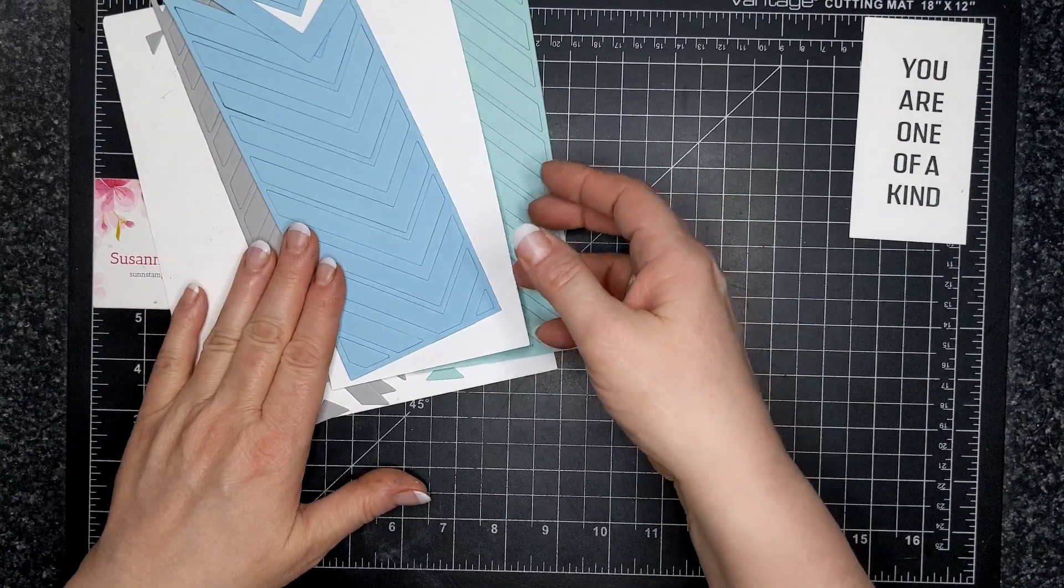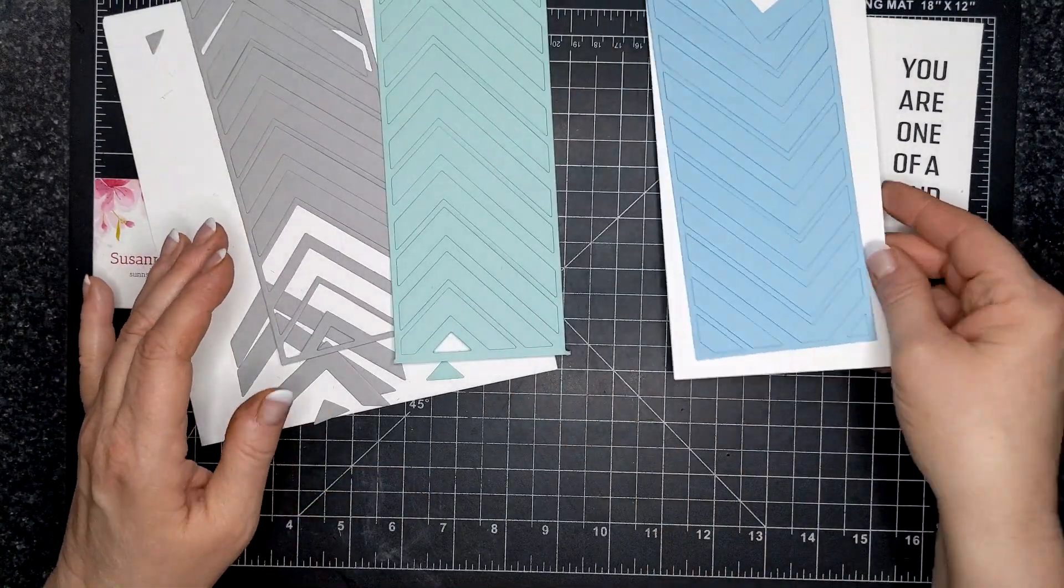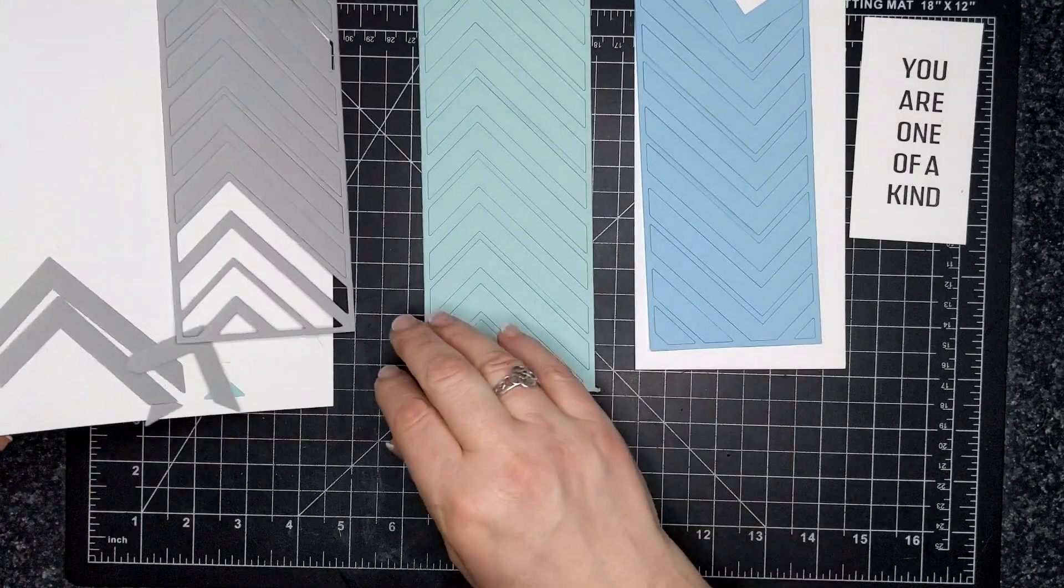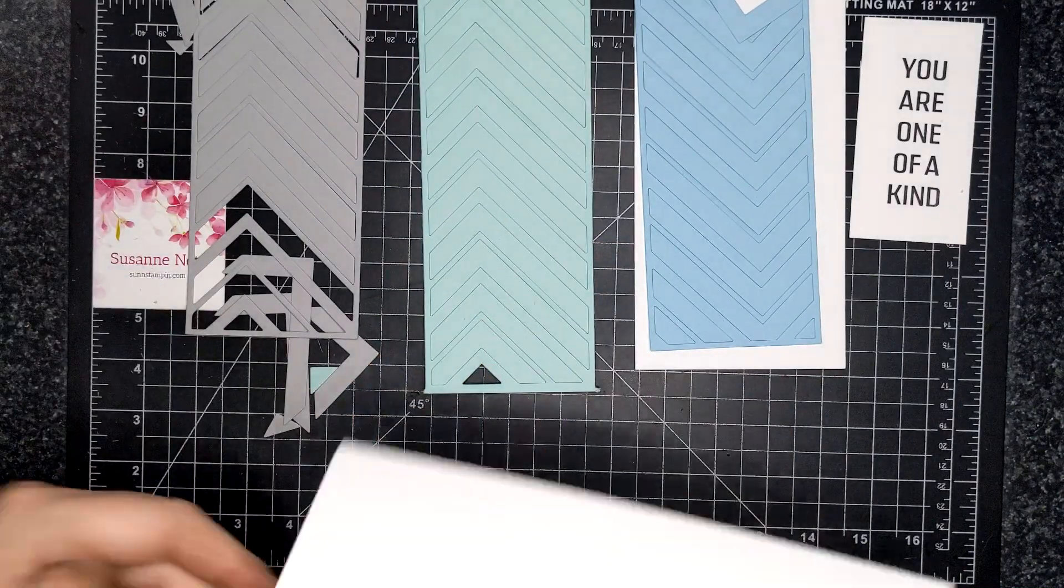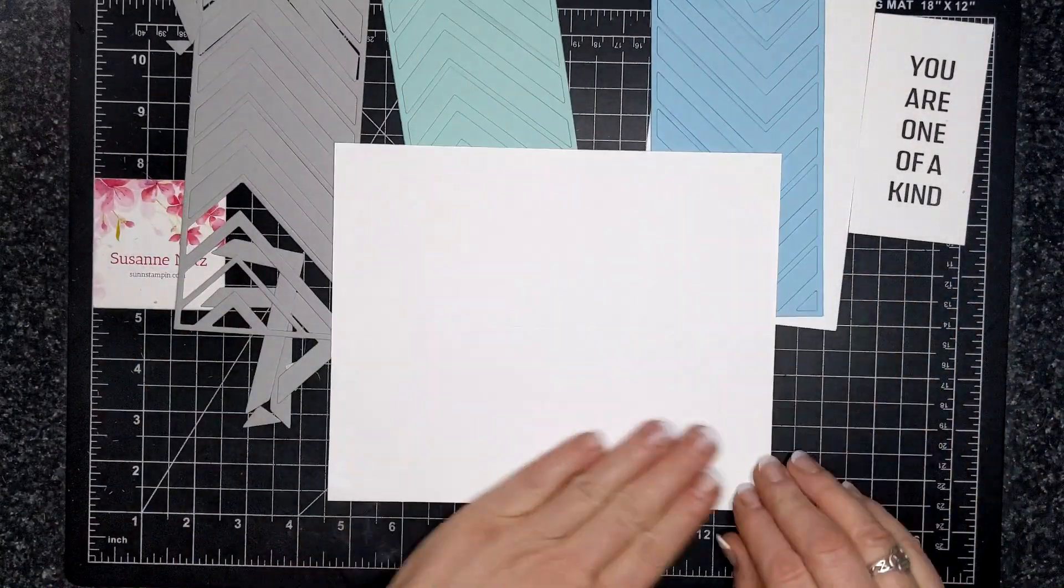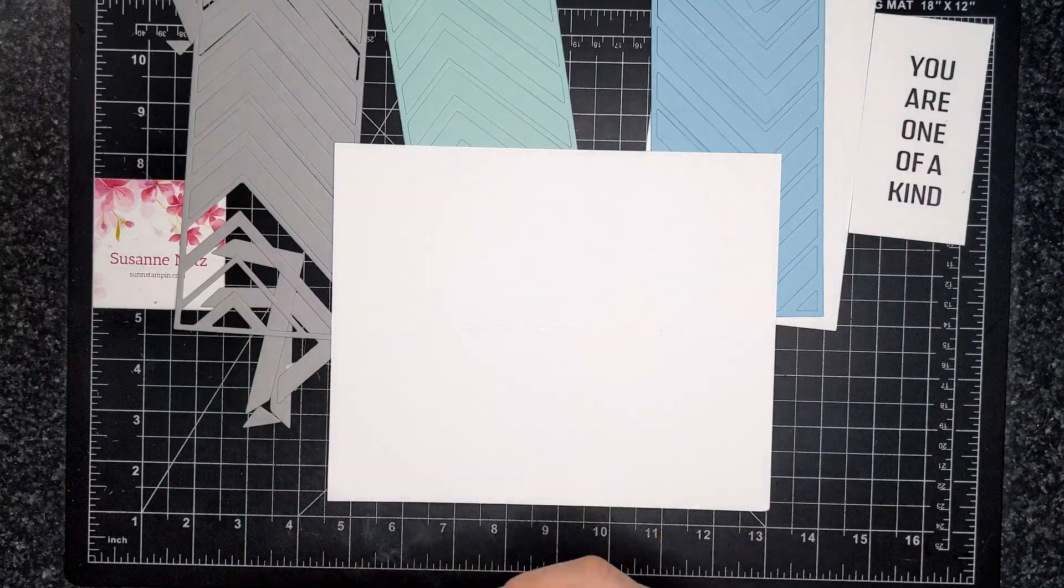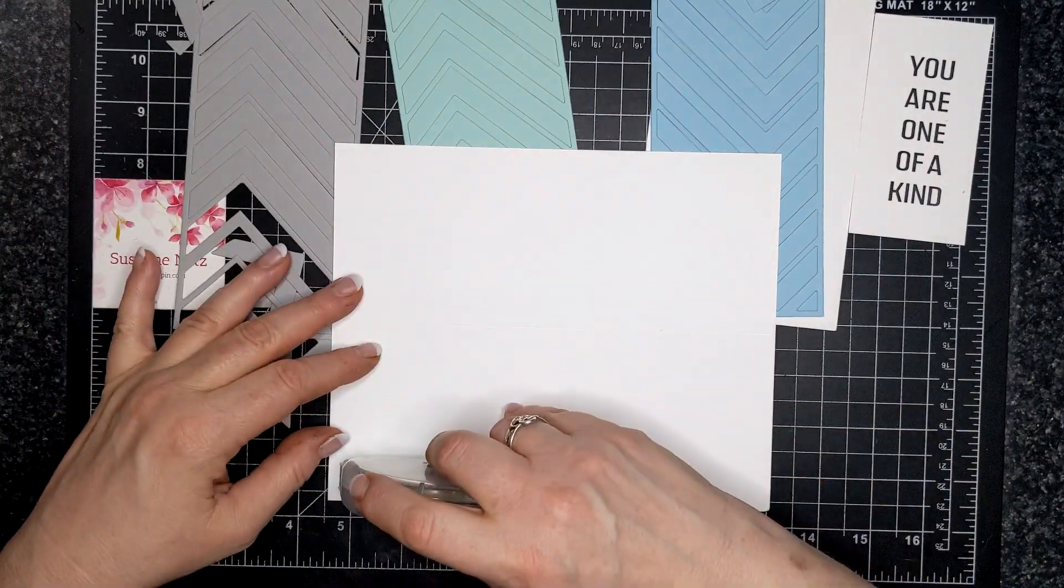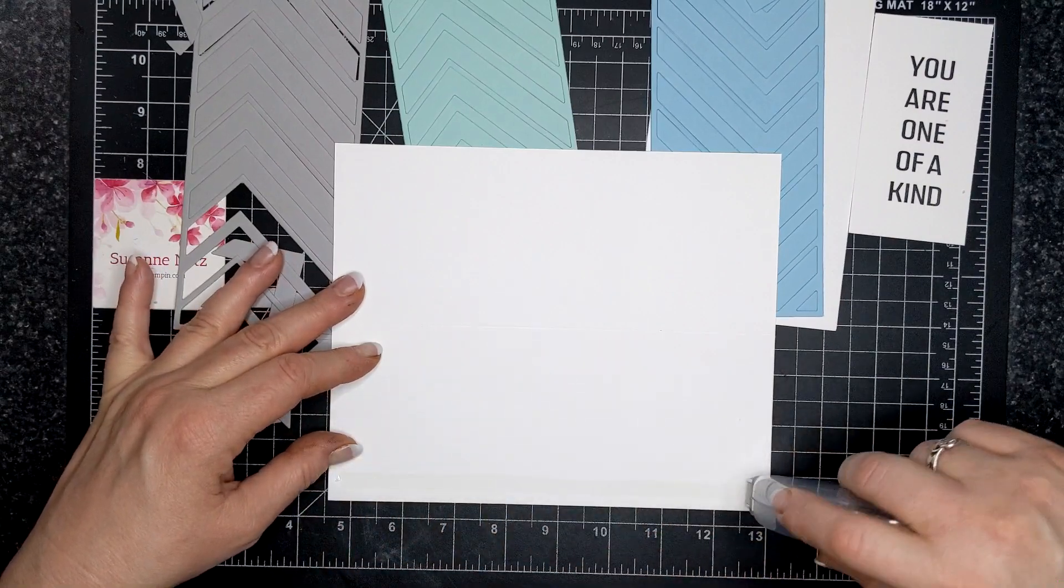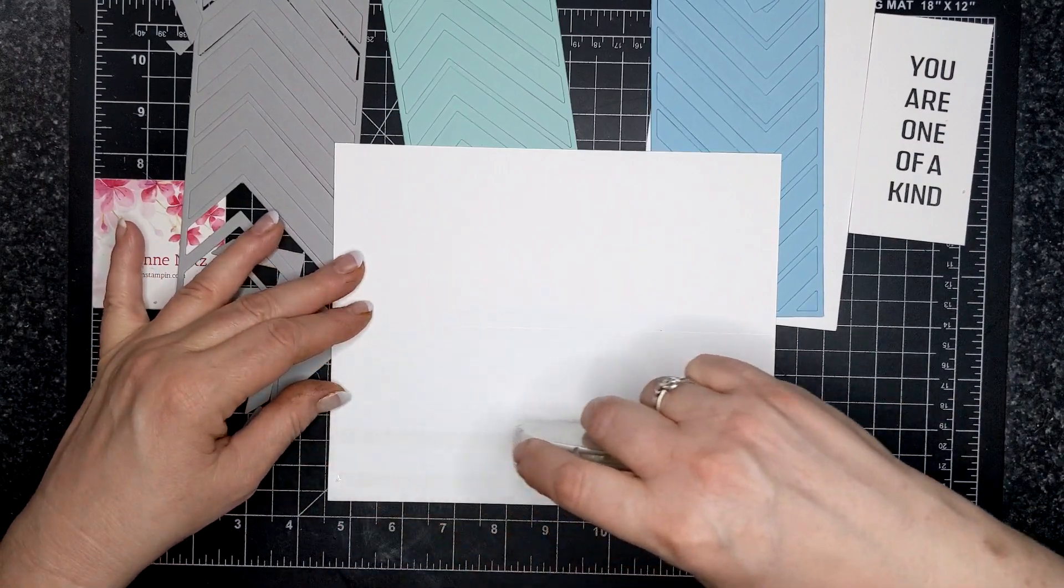All right, so let's see, here we have three pieces that I die cut. So that's balmy blue, mint macaron, and smoky slate. And I have a slimline card base here that is seven inches by eight and a half inches scored at three and a half.